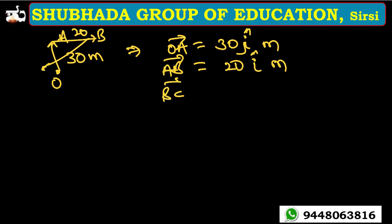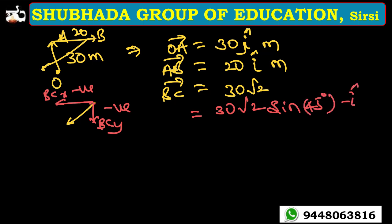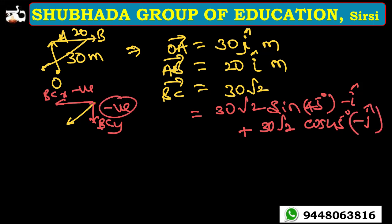B to C is 30√2 meters in the southwest direction. The southwest direction has components: BC vector equals 30√2·sin45°(−î) + 30√2·cos45°(−ĵ). Since sin45° = cos45° = 1/√2, this gives BC = −30î − 30ĵ.